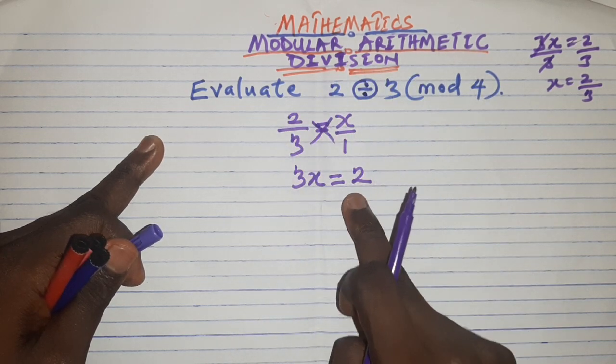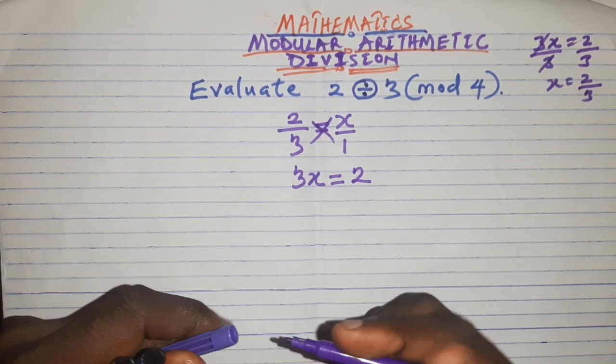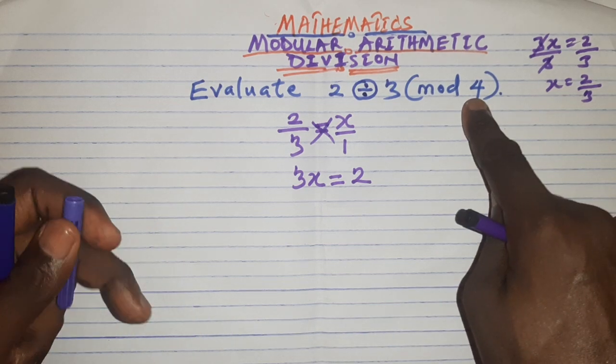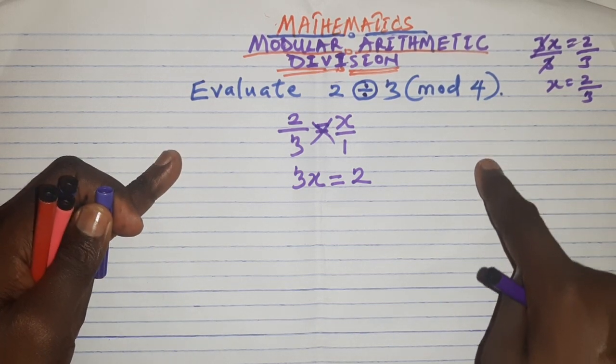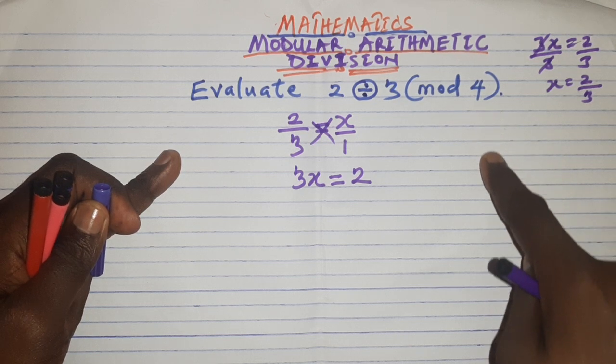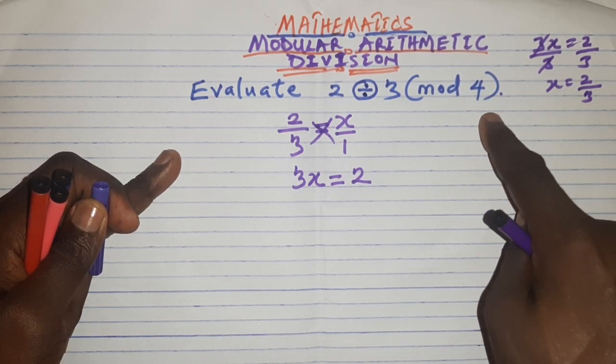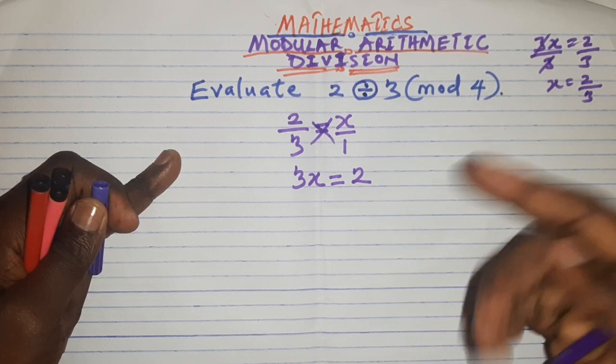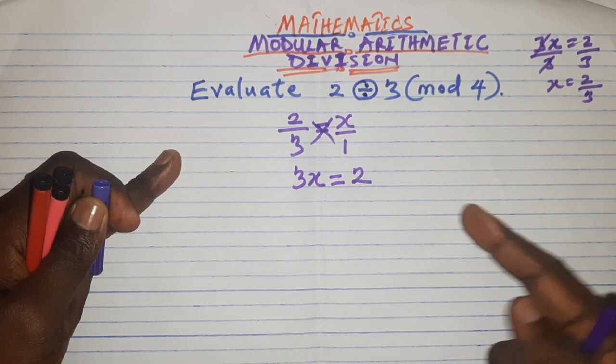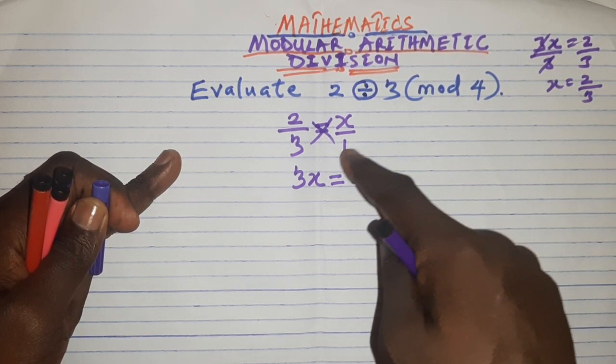So you have to be able to manipulate this equation in a way that 3 will be able to divide what is on the right hand side. Your best bet now is to go back to the mod which is 4 and list out all the multiples or some of the multiples of 4. Pick the smallest multiple that you can add to 2 to make the right hand side divisible by 3.